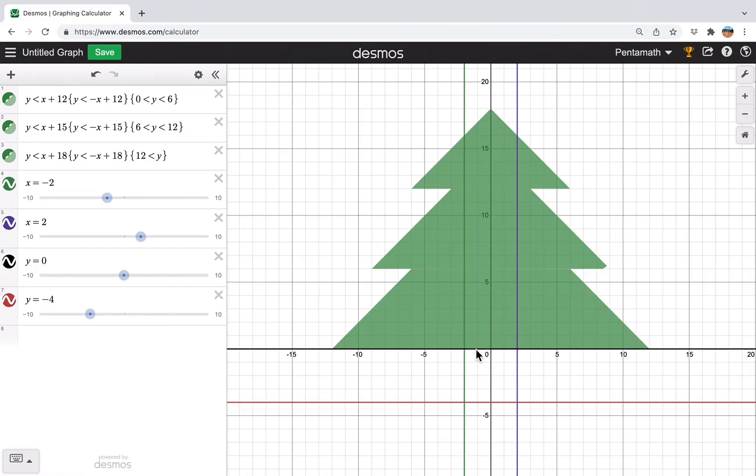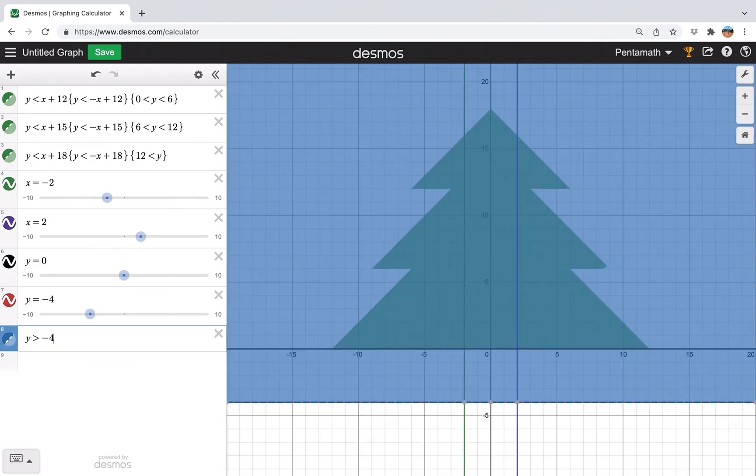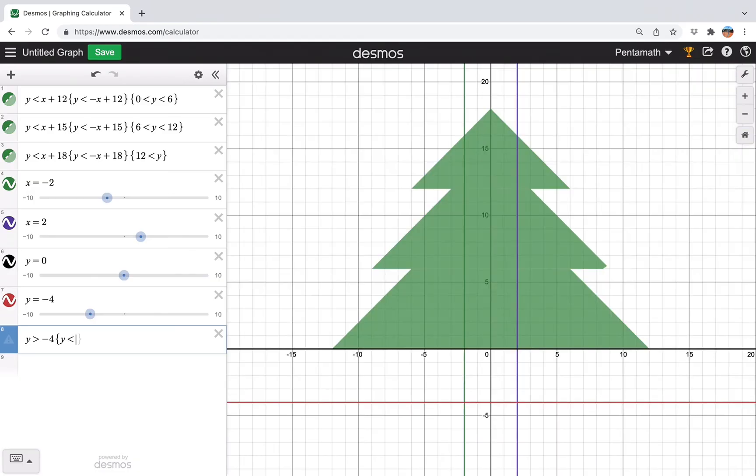And then we just need to get that region over there. Now we just need to build the inequality. So y is more than negative 4. But y is also less than 0. And then x is between negative 2 and 2, like that. Now we can get rid of the lines.